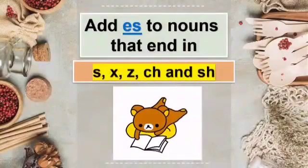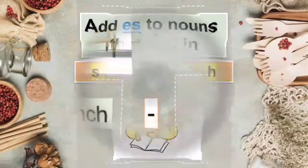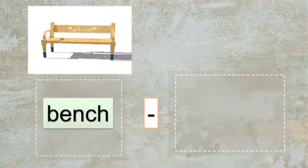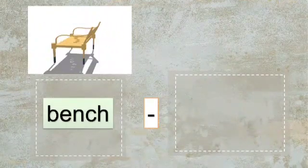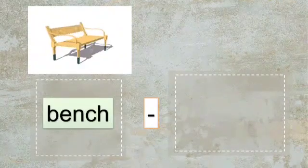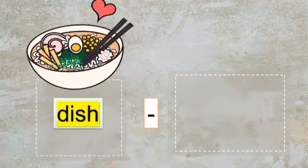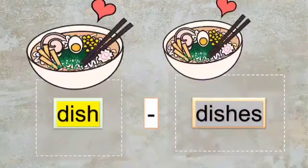Rule 2: singular nouns which end with S, X, Z, CH, or SH — when we change them into plural, we add ES. For example, the spelling of bench ends with CH, so we add ES to make it plural: one bench, two benches. Another example: dish. The spelling of dish ends with SH, so we add ES at the end: one dish, two dishes.